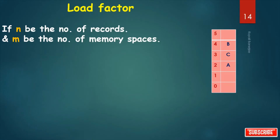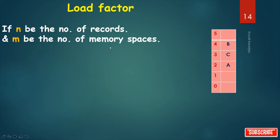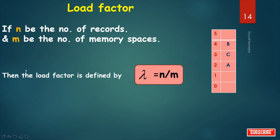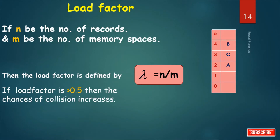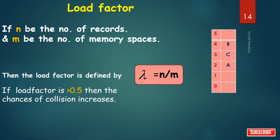Another important topic is load factor. If n is the number of records and m is the number of memory spaces, the load factor is defined as λ = n/m. In our example, n = 3 and m = 6, so λ = 3/6. If the load factor is greater than 0.5, the chances of collision increase — that is, as n increases, the probability of collision increases.